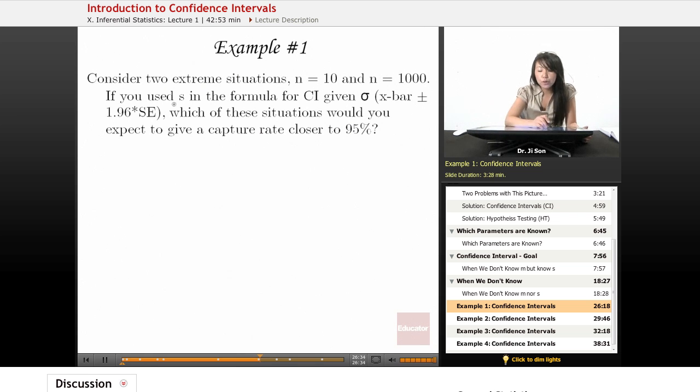If you use S in the formula for CI given sigma, so here's the actual formula for when you have sigma. We use 1.96 because you use the z-score. Which of these situations would you expect to give a capture rate closer to 95%?